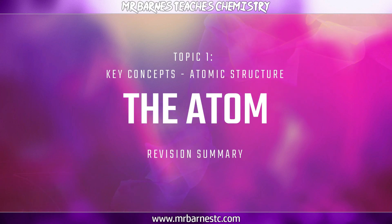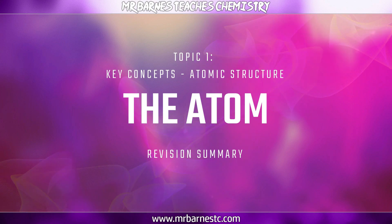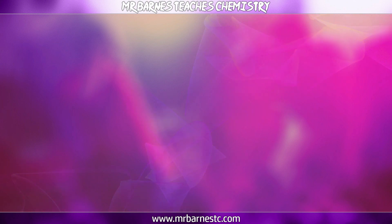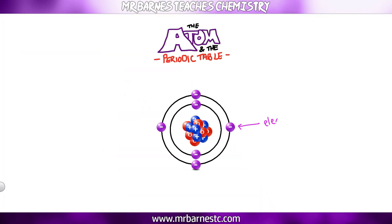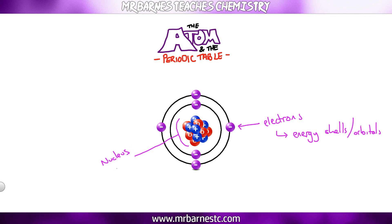What you need to be able to do is tell me where the subatomic particles are in the atom, what their charge is, and what their mass is. Electrons go around in energy shells or orbitals. In your nucleus, which is the part in the center, you have protons and neutrons. The number of protons and neutrons in the center is your mass number — that is where most of the mass of the atom is.